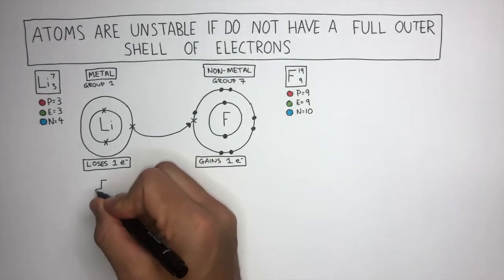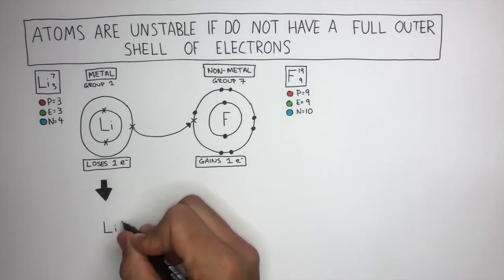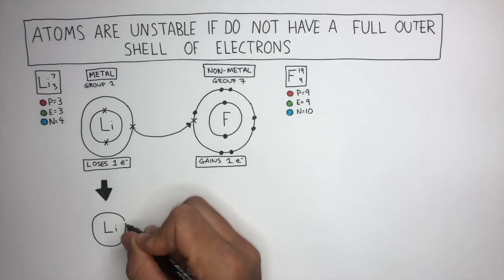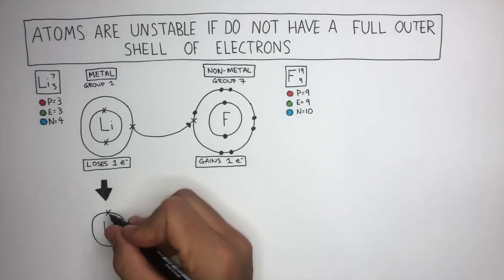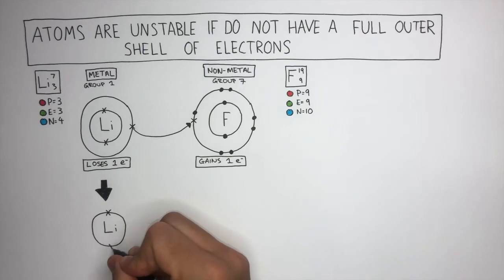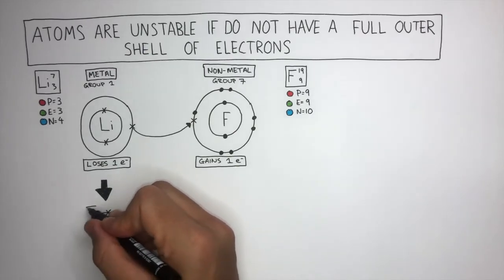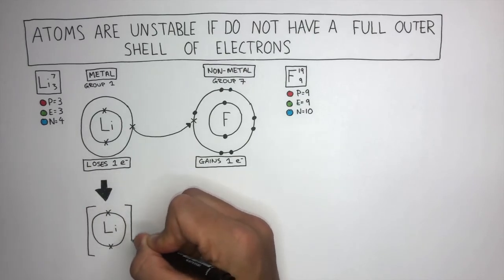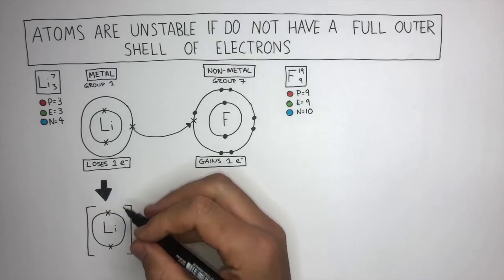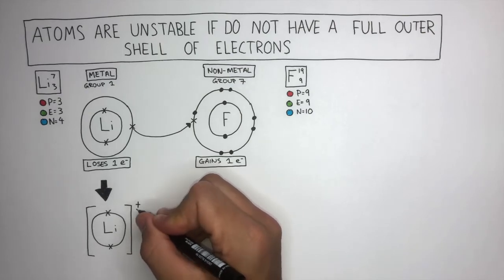When an atom loses or gains electrons, an ion is formed. Let's now take a look at the structure of this lithium ion. As it's lost its outer electron, it now only has 1 full shell consisting of 2 electrons. When you draw the electronic configuration of an ion, you must draw square brackets around the ion, and the charge of this ion is 1 plus, so we draw a plus sign in the top right.